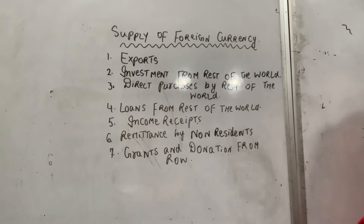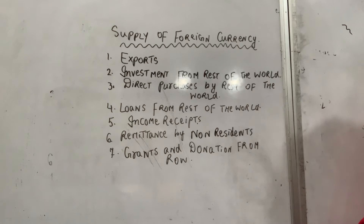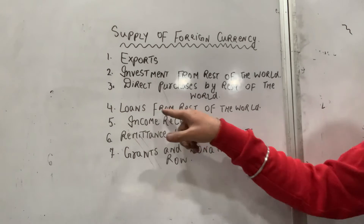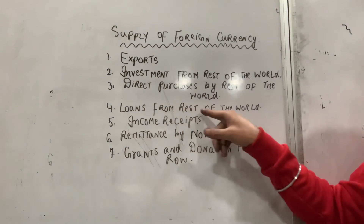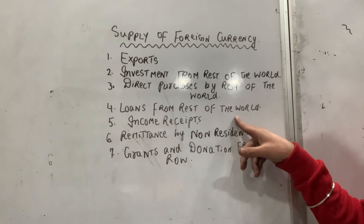That is the case of our bank accounts, where we have to transfer the dollar. The Central Bank converts foreign currency. It came to loans — that was the loan from the rest of the world, which is another source of foreign currency supply.